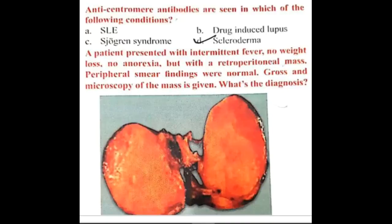Hello friends, welcome to a new session on previous year questions. Anti-centromere antibodies are seen in which of the following conditions? Remember, anti-centromere antibodies are seen in scleroderma. SLE has anti-histone antibodies and anti-nuclear antibodies, anti-double stranded DNA antibodies.